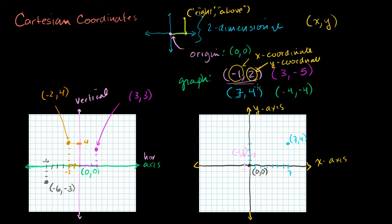Now the point 3, minus 5. The first coordinate is in the horizontal direction, so we go 1, 2, 3 to the right. The second coordinate is our up or down — it's negative, so we go down 5: 1, 2, 3, 4, 5. So we go 3 to the right and down 5, ending up right over there at 3, minus 5.